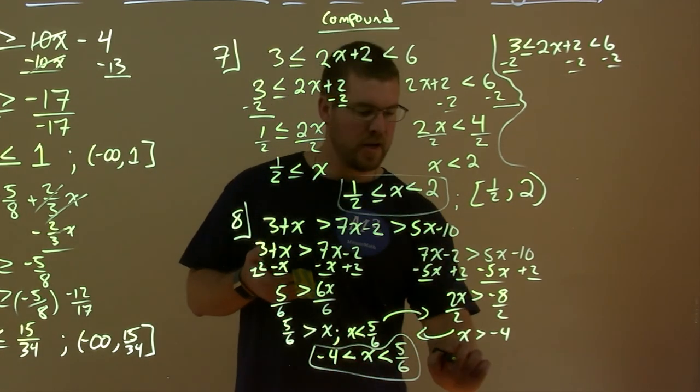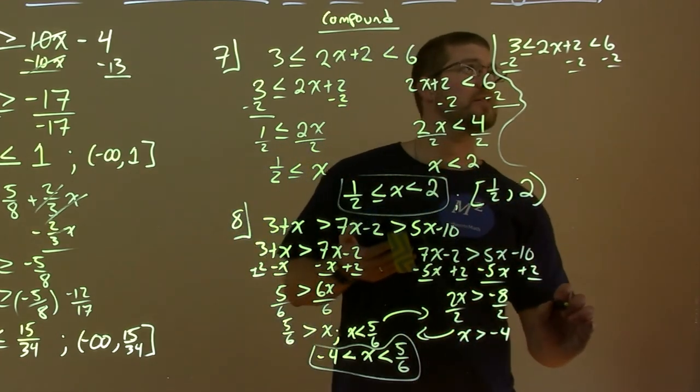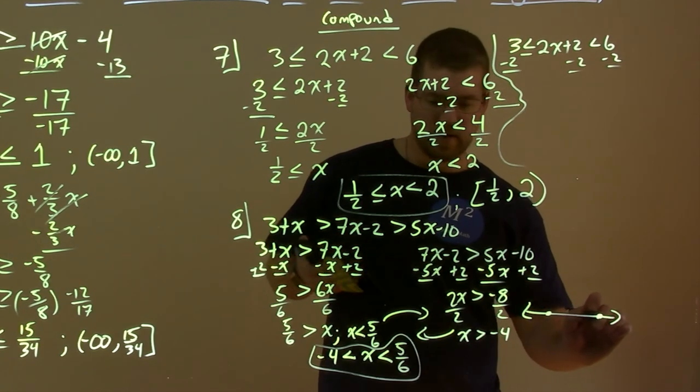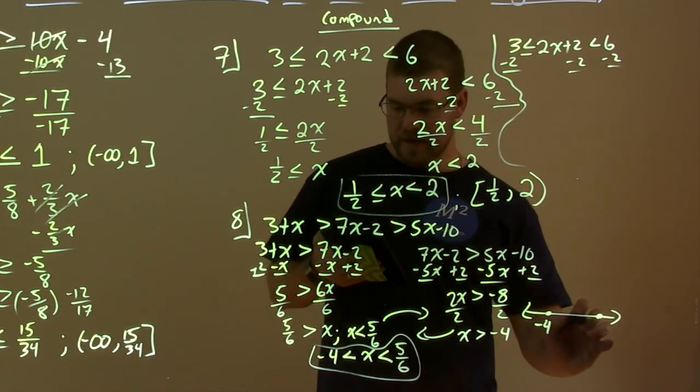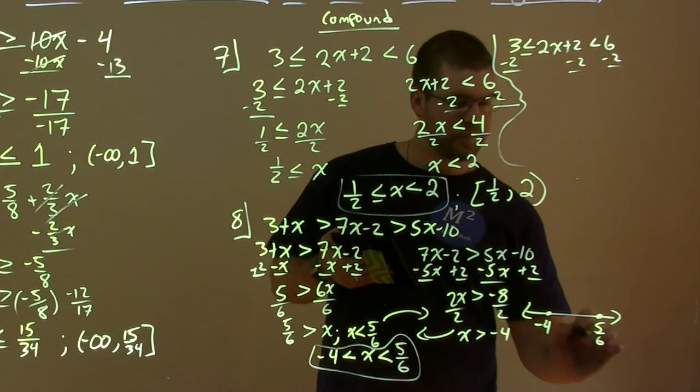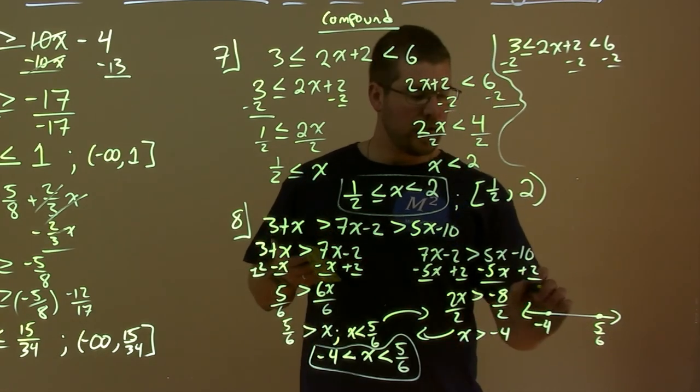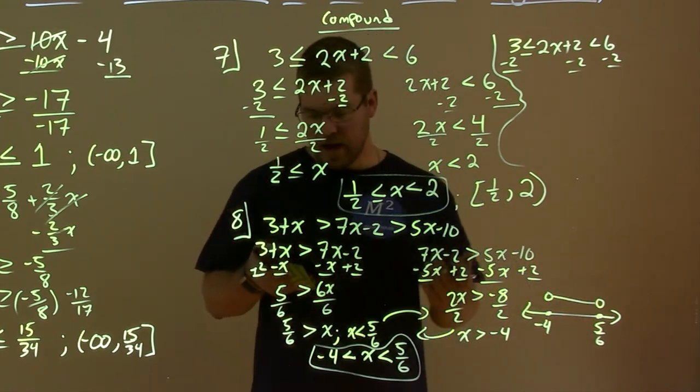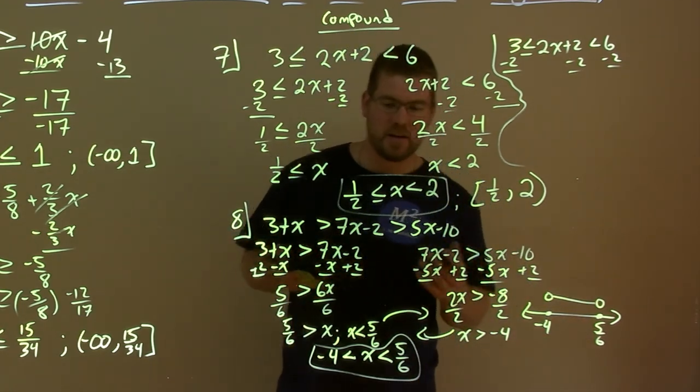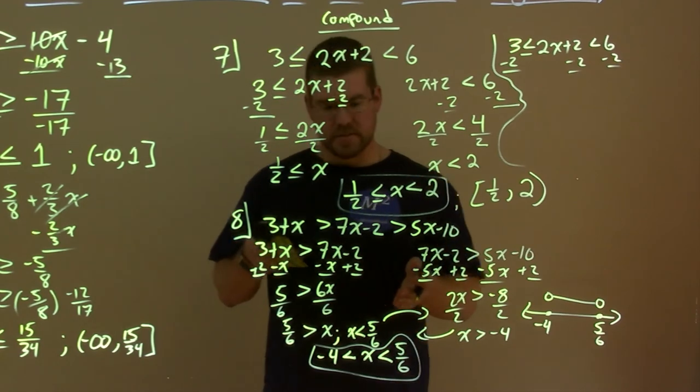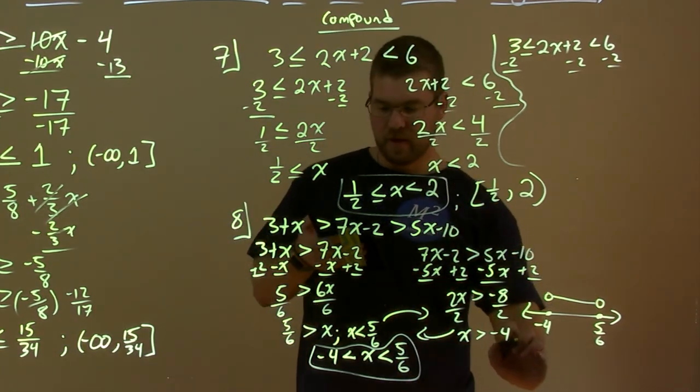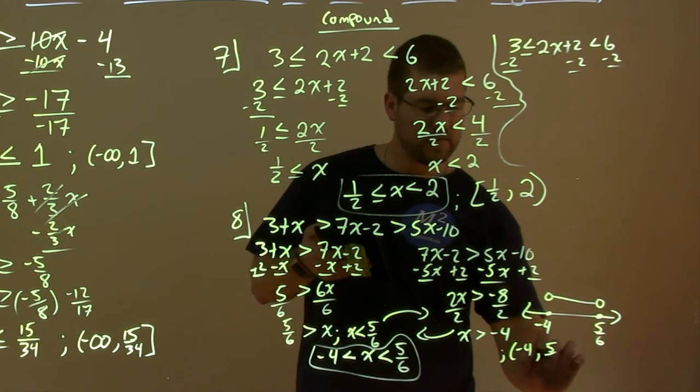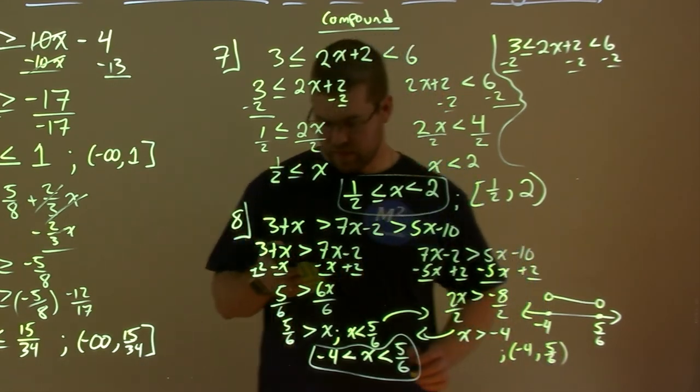There. If you want to see it on a number line. We'll put that right here. We have two values here. We have negative 4 and 5 sixths. And it doesn't equal any of them. So, we have an open circle at those values. We can connect in between. And that's where our values that x can be. Between negative 4 is less than x which is less than 5 sixths. If you want that interval notation. Negative 4, 5 sixths. And we have parentheses there.